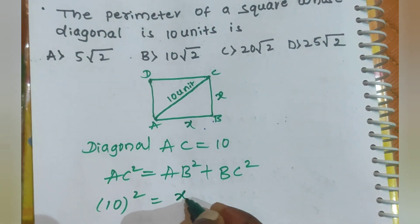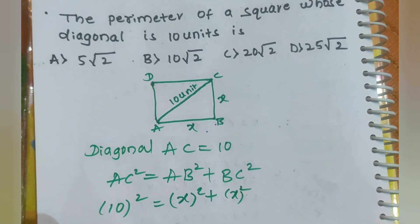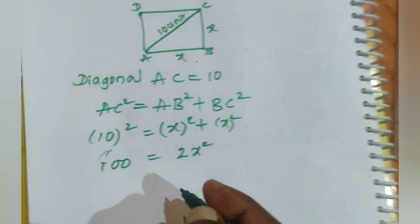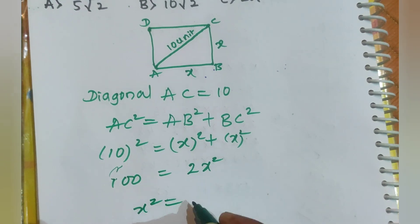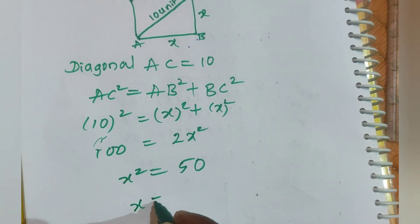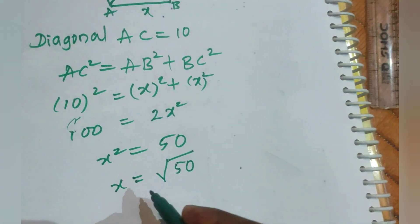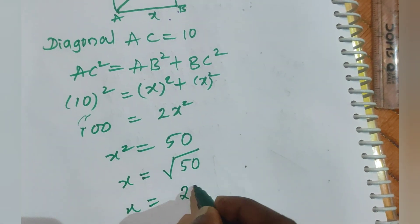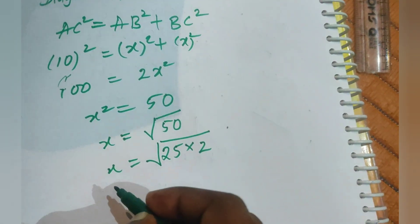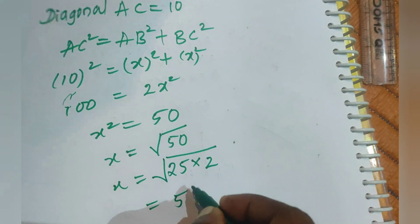So that's X² + X² = 2X² = 100, therefore X² = 50, and X equals the square root of 50. Since 50 = 25 × 2, the square root of 25 is 5, so X = 5√2.